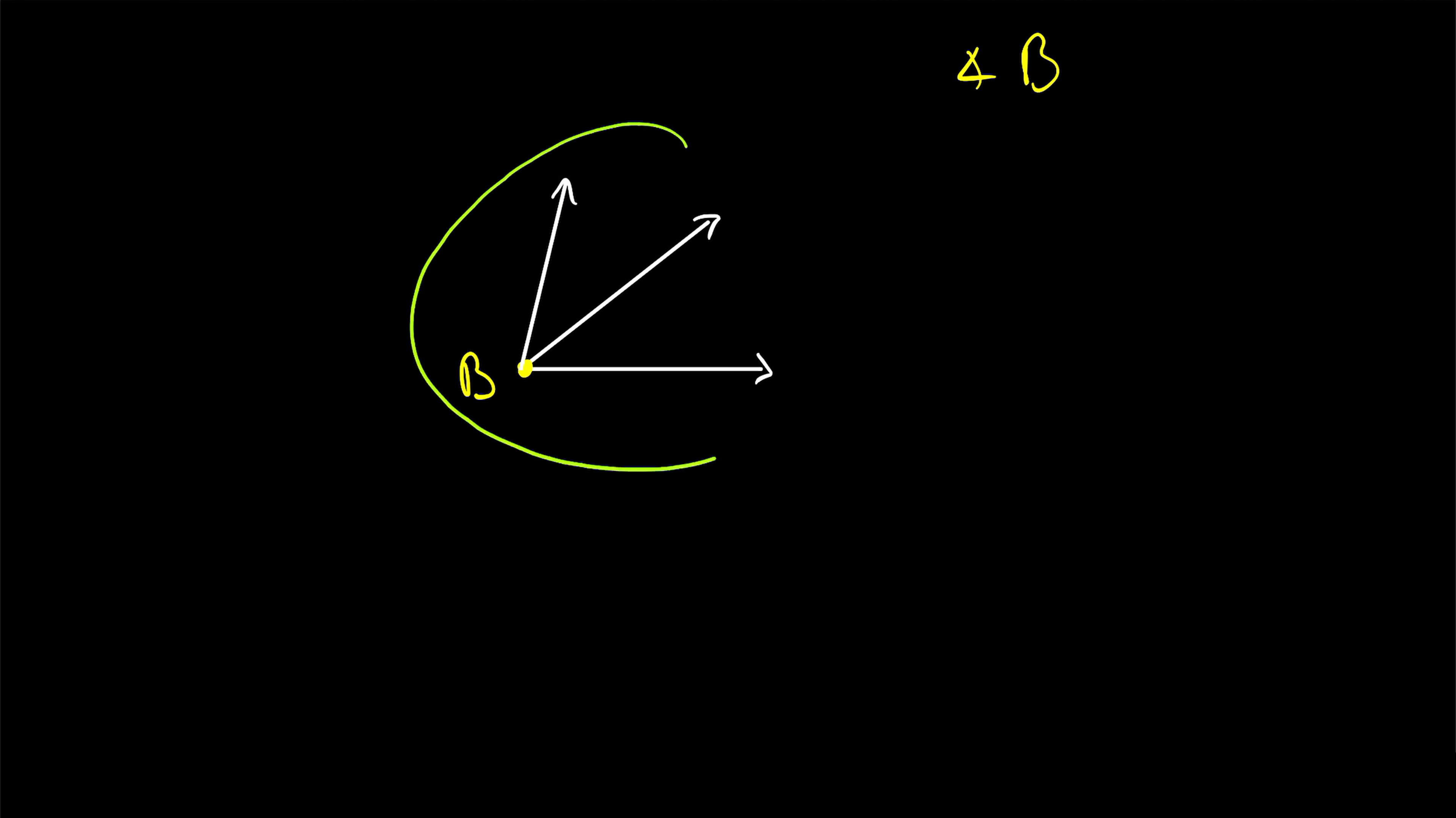In order to name the angles in this more complicated situation, we use the names of points on the rays. So we just pick any point on these rays that are not the vertex. And let's say we call those points A, C, and D. Now we can use three letters to specify the angle that we're talking about.